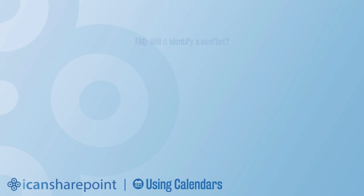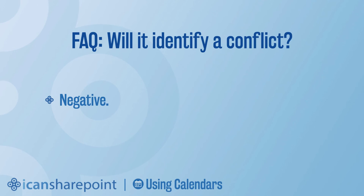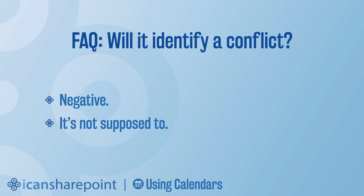Will it identify conflicts? It will not — and frankly, it doesn't need to. You don't want it to for things like out-of-office calendars, where two people taking the same day off shouldn't be flagged as a conflict. For conference room reservations, just use your head and don't conflict with someone else's request. If a conflict does happen because someone wasn't paying attention, every list item in SharePoint has a timestamp on it, so whoever created it first wins.